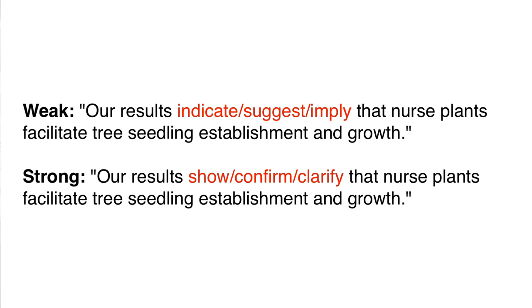Seven: use correct verbs to convey the strength of your claim. The first version uses a weak verb to show some uncertainty in the results. The second version is stronger. Depending on the strength of your data, select the appropriate verb.